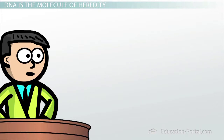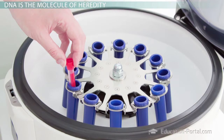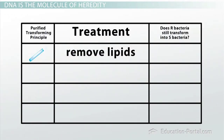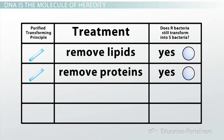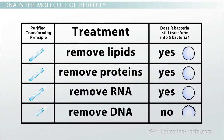Avery spent many years purifying the transforming principle, then tried to characterize which type of molecule was responsible for transforming R-bacteria into S-bacteria. Avery and his team devised a series of clever experiments. By spinning the purified sample very fast in a machine known as a centrifuge, fats were eliminated from the sample. Samples treated in this manner could still transform R-cells into S-cells. Shockingly, treating the sample with something that degrades protein did not affect the ability of the purified sample to turn R-cells into S-cells. Treating the sample with a substance that degrades RNA also did not affect the transforming principle. However, treating the purified sample with something that degraded DNA eliminated the R-to-S transformation.